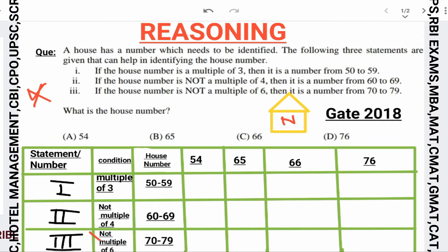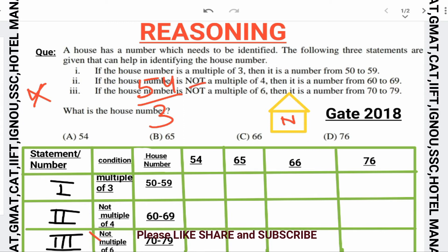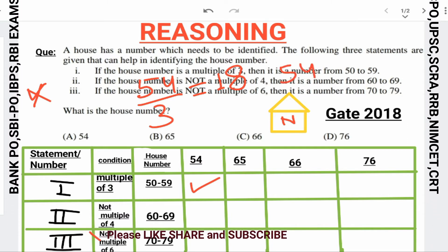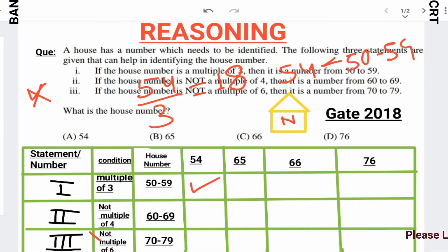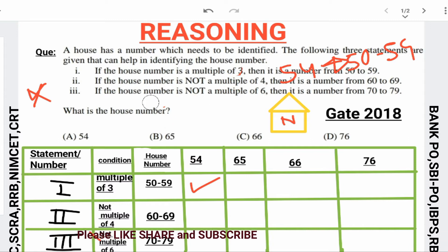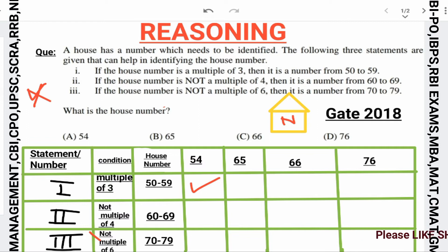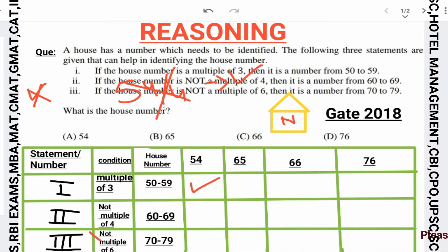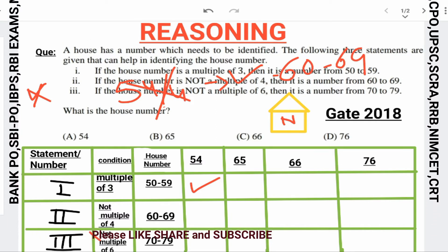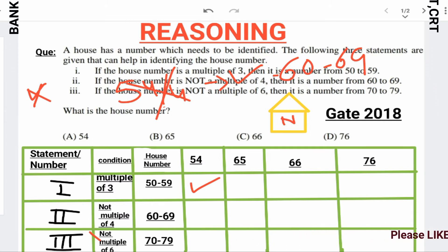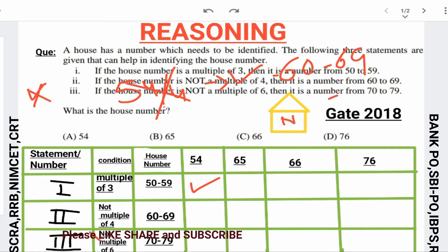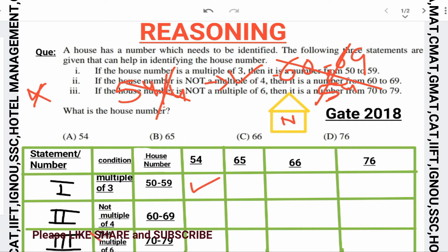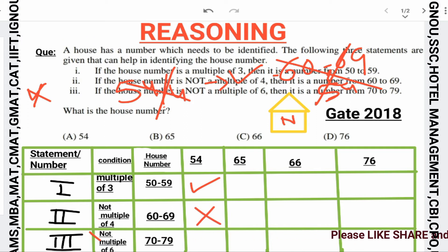Is 54 a multiple of 3? Yes, it is a multiple of 3, so the first condition says it should be between 50 and 59 — and 54 does lie in that range, so the first condition is satisfied. Is 54 not a multiple of 4? Correct, 54 is not a multiple of 4, so the second condition applies. But 54 does not lie between 60 and 69.